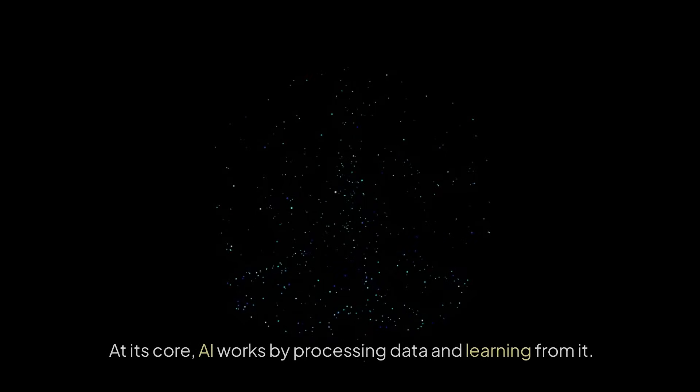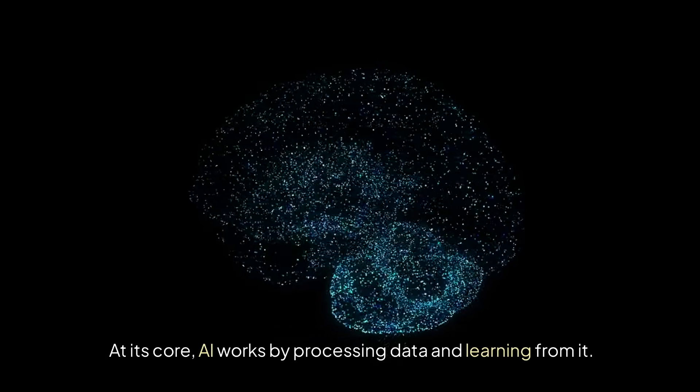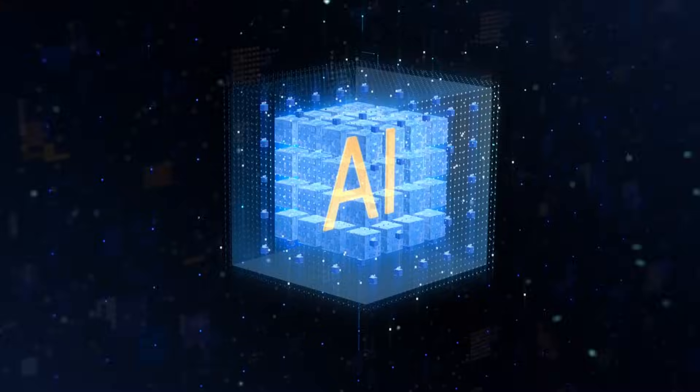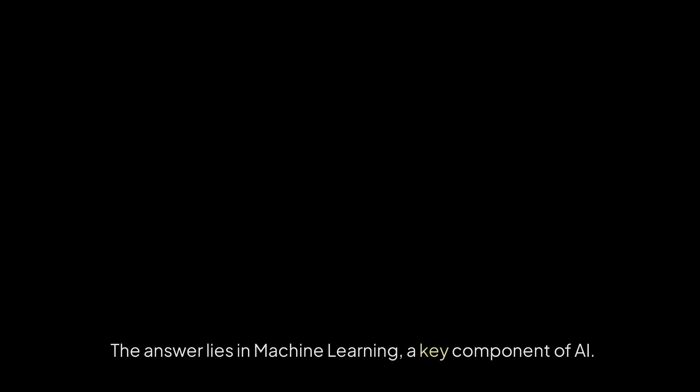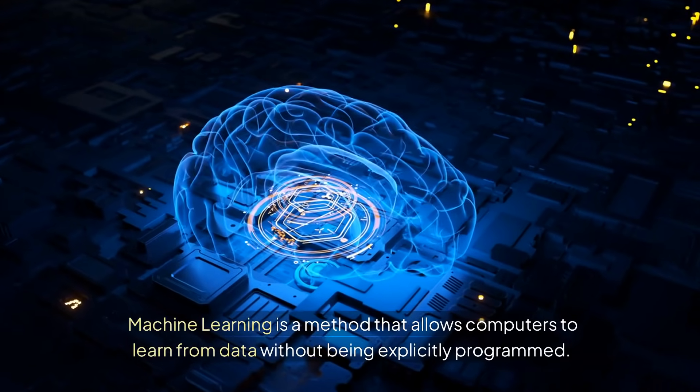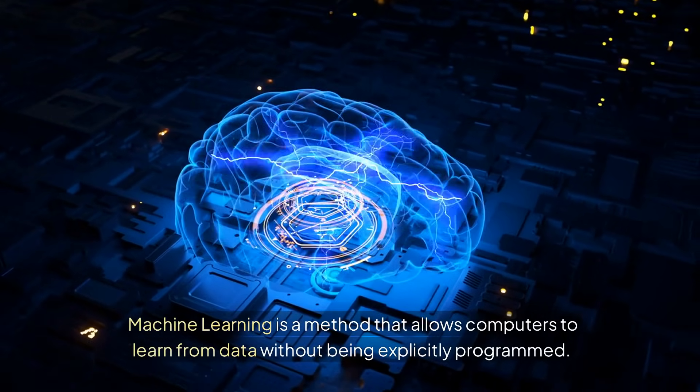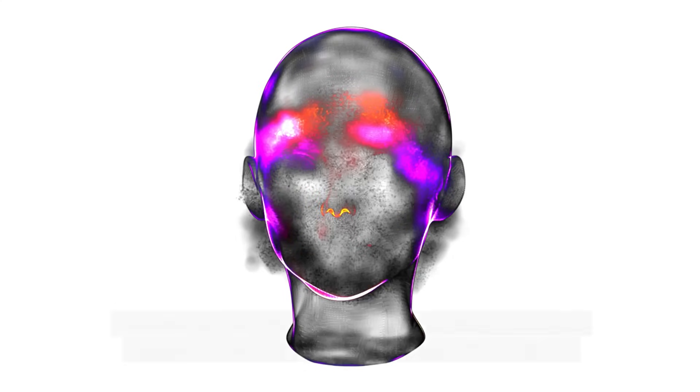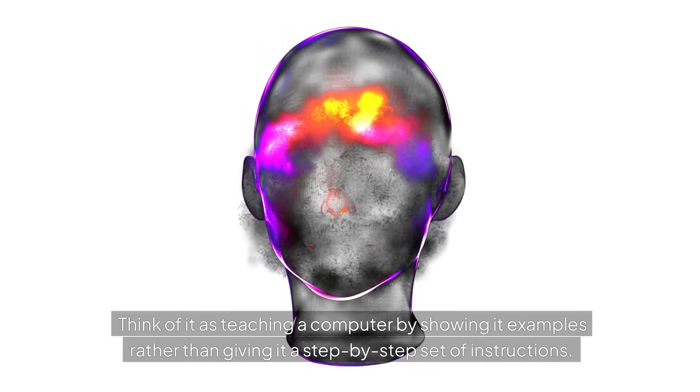How does AI work? At its core, AI works by processing data and learning from it. But how exactly does it do that? The answer lies in machine learning, a key component of AI. Machine learning is a method that allows computers to learn from data without being explicitly programmed. Think of it as teaching a computer by showing it examples rather than giving it a step-by-step set of instructions.